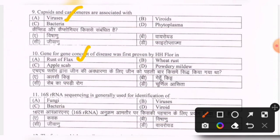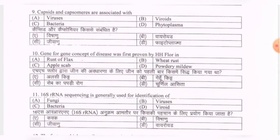Next question: 16S rRNA sequencing is generally used for the identification of — options are fungi, viruses, bacteria, viroids. The correct option is bacteria.